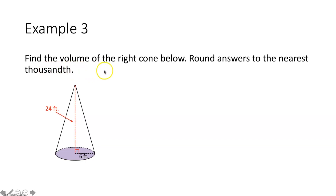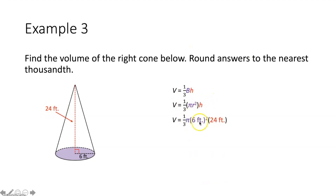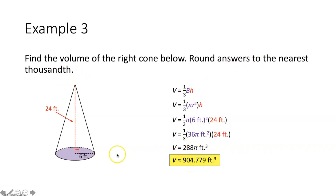Example 3: find the volume of the right cone. The cone has a circular base with radius 6 feet and height 24 feet. V equals one-third times π times 6² times 24. Six squared equals 36, times π gives 36π square feet for the base area. One-third times 36π times 24 gives an exact volume of 288π cubic feet. Rounded to the nearest thousandth, the volume is approximately 904.779 cubic feet.